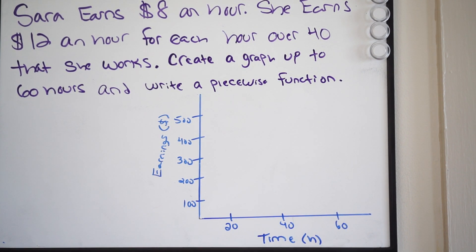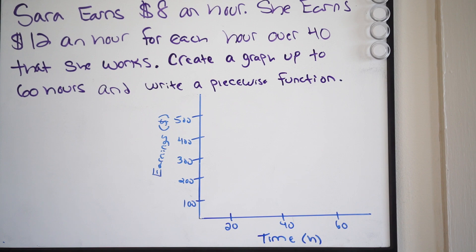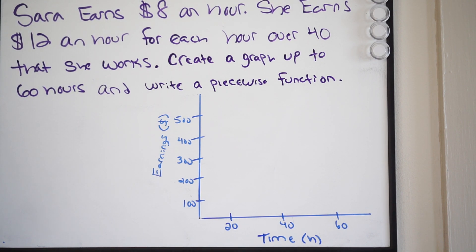It says Sarah earns $8 an hour. She earns $12 an hour for each hour over 40 that she works. So every hour past 40, she's going to get an extra $12 an hour. It says create a graph up to 60 hours and then write a piecewise function.